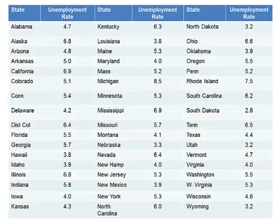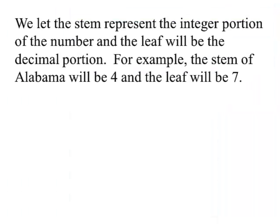Here's the raw data. So we're going to construct a stem and leaf plot for this data. We will let the stem represent the integer portion of the number, and a leaf will be the decimal portion. For example, the stem of Alabama will be four, and the leaf will be seven.